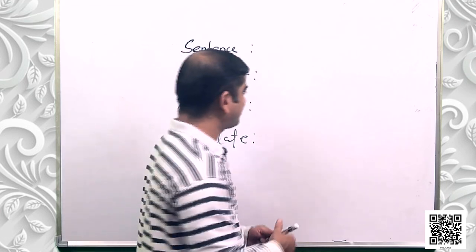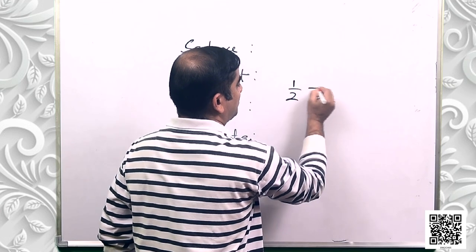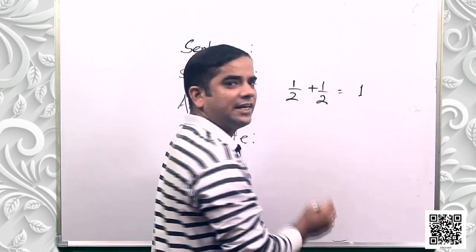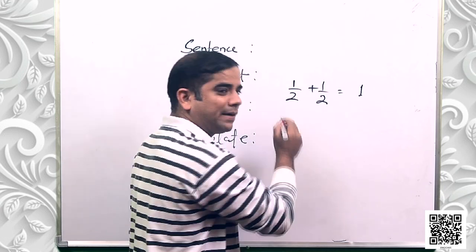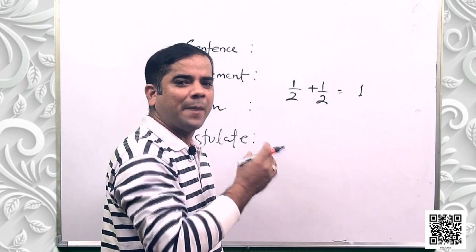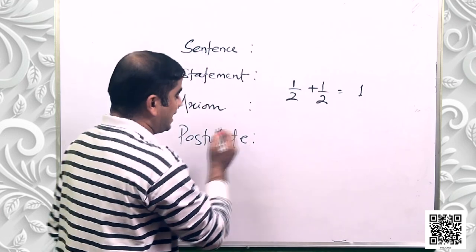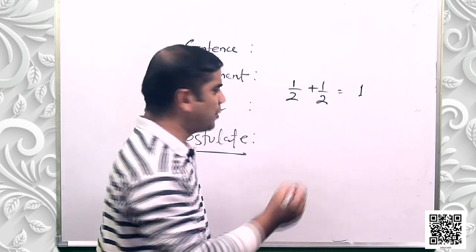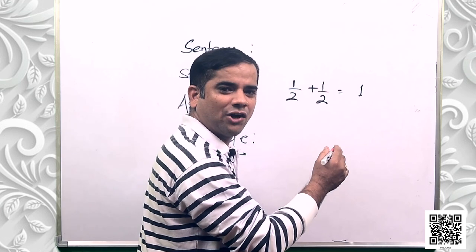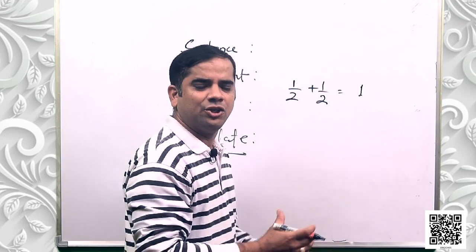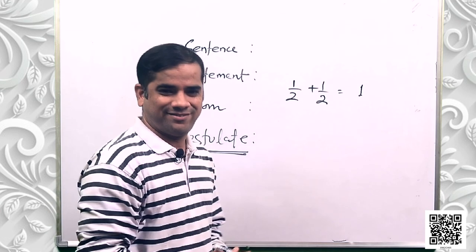For example, 'half plus half is equal to one' is a universal truth dealing with mathematics — that is an axiom. 'A line segment is a part of a line' is a universal truth specific to geometry — that comes under a postulate.